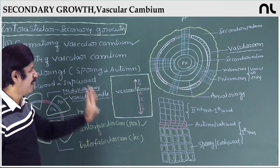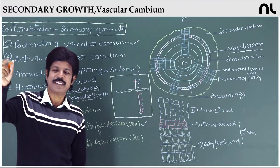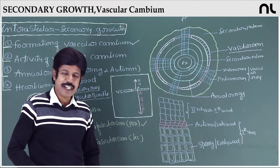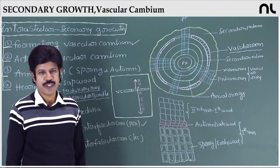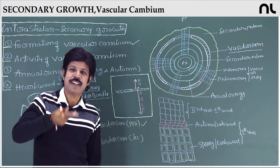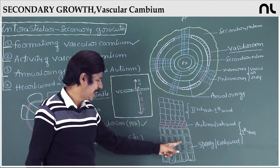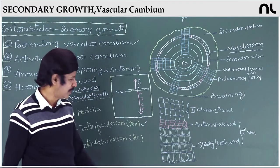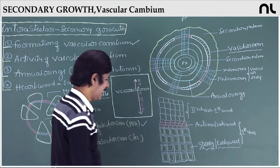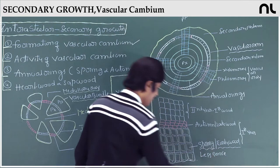The activity of vascular cambium differs in different seasons. It is highly active in spring season, when new leaves and new flowers are formed, requiring more water, minerals, and food. So the vascular cambium produces more tissues inside. In spring, the xylem vessels have wider cavities and are more in number. This wood is called spring wood or early wood — it is less dense wood.